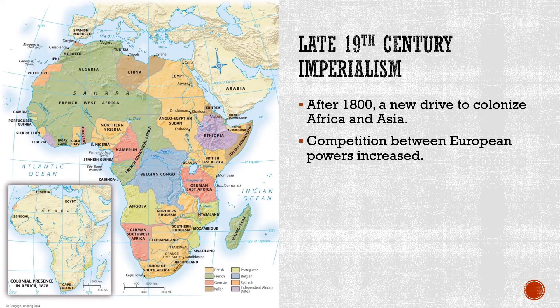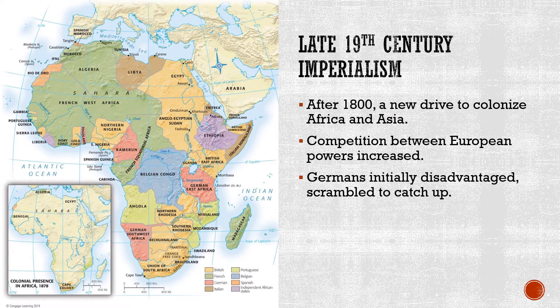When you look at that map, you see a lot of green that's under the control of France, a lot of orange which is the control of Britain, some of Belgium, some of Portugal, and you also even see some colonies that Germany set up such as Cameroon and German East Africa and German Southwest Africa. Germany, because it was late in being formed, was a little bit late to the game of creating an overseas empire, but they quickly scrambled to catch up.